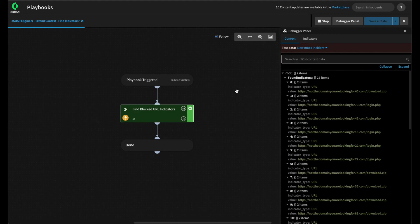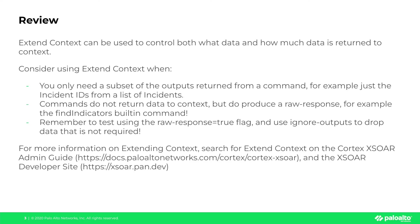Let's review what we did in this video. Extending context can be used to control both what data and how much data is returned into context. Consider using it when you only need a subset of outputs — for example, just the incident IDs from a list of incidents. You can also use it for commands which do not return data into context but do have a raw response — for example, returning the type and value of indicators from the Find Indicators built-in command. Remember to test using the raw_response=true flag, use ignore outputs to drop data you don't require, and check both the Cortex XOR admin guide and the XOR developer site for more information.